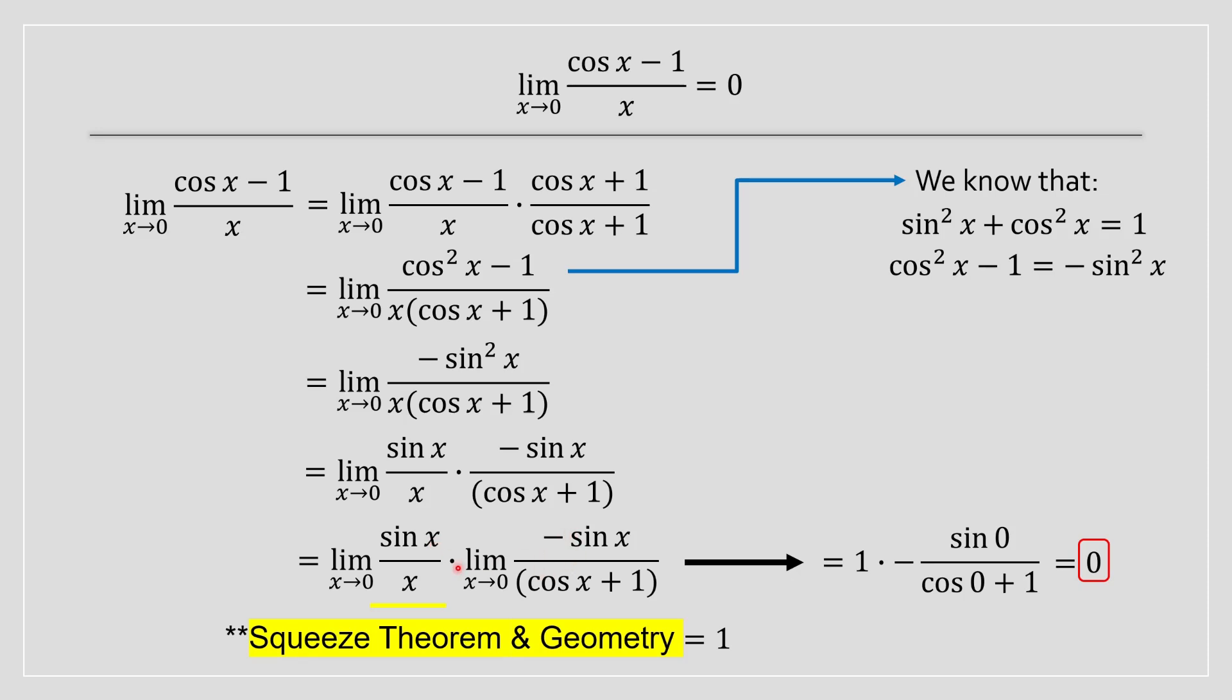You basically have 0 multiplied with this limit over here. So no matter what number you have over here, whenever you multiply something with 0, you're going to have 0. And therefore, this is why when you solve for this limit, you end up at an answer equal to 0.